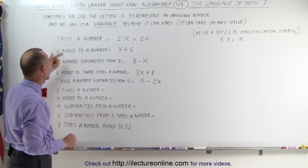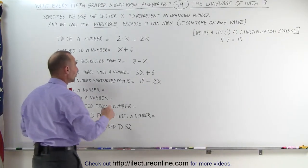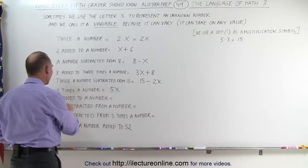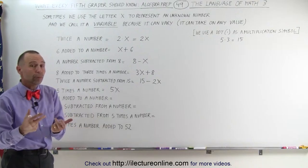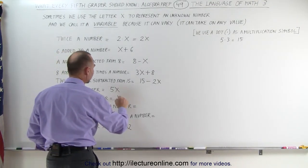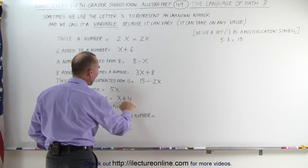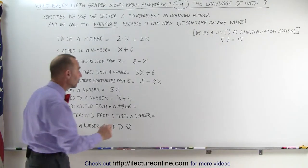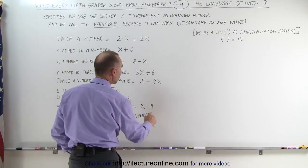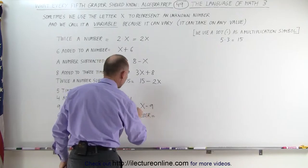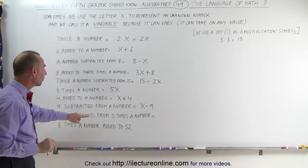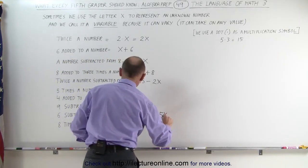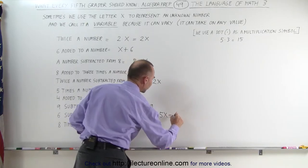'5 times a number' — just like twice a number — we simply write 5X. 5X means 5 times an unknown number X. '4 added to a number': we have unknown number X, we add 4 to that, so we write X plus 4. '9 subtracted from a number X': the unknown number is X, we subtract 9 from that, giving X minus 9. '6 subtracted from 5 times a number': 5 times a number is 5X, subtract 6 from that, giving 5X minus 6.